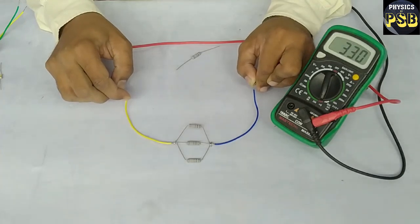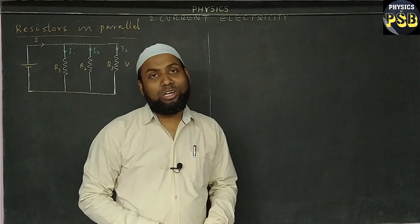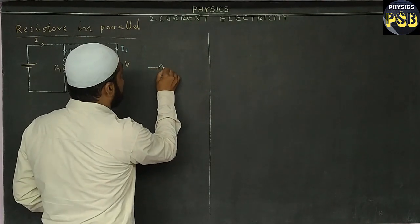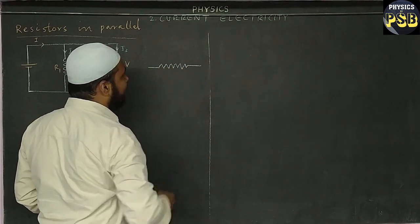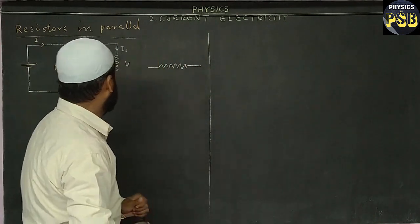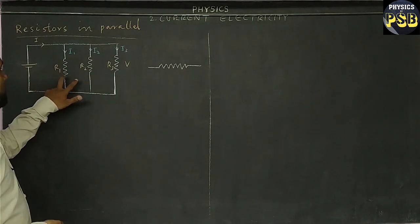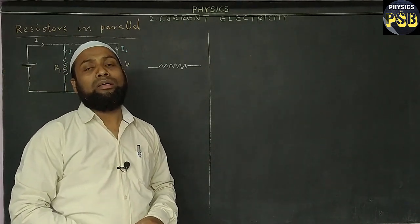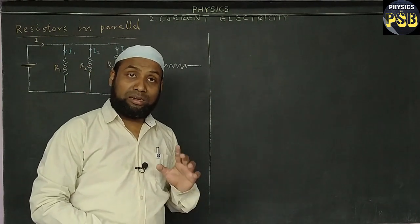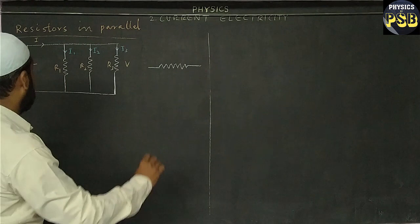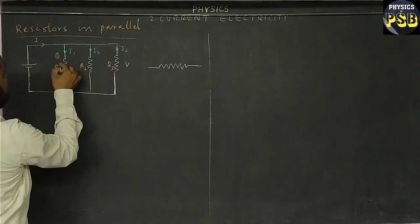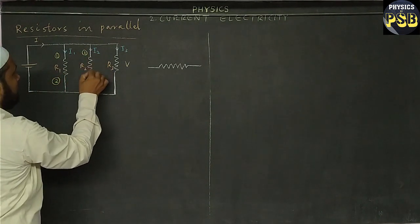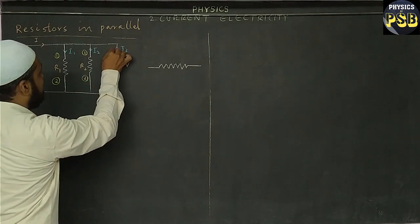I have told you earlier, the symbol of a resistor is represented like this - that is a device that opposes the flow of current. Here I have taken three resistors R1, R2, and R3 connected in parallel. When we say parallel combination, that means we connect the same terminals.